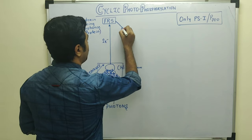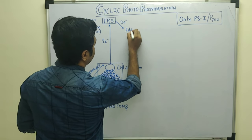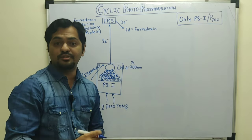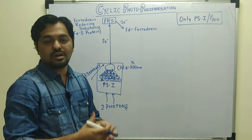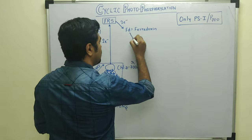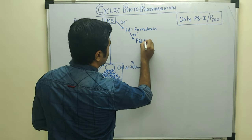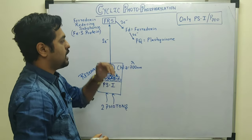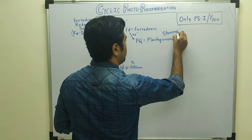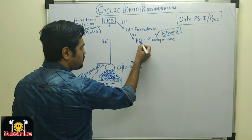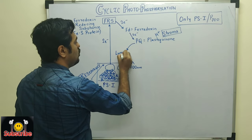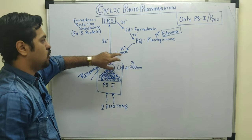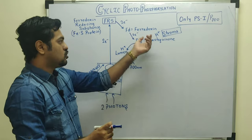From FRS, electrons are transferred to Ferredoxin (FD) — this is a downhill journey, meaning the energy of the electrons decreases progressively. From Ferredoxin, the two electrons are passed to PQ — Plastoquinone. Plastoquinone plays an important role in both cyclic and non-cyclic processes: it transfers protons from the stroma, absorbs them to become PQH2, and then passes those protons into the lumen of the thylakoid. So Plastoquinone pumps protons from the stroma into the thylakoid lumen.